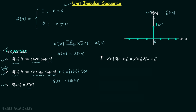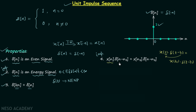The fourth property is an important one we have already used for continuous time signals. For a continuous time signal x(t) multiplied by delta(t - t1), the result equals x(t1) multiplied by delta(t - t1). Similarly, for discrete time signal x[n] multiplied by delta[n - n1], we replace n with n1 and get x[n1] multiplied by delta[n - n1]. This property is used a lot.